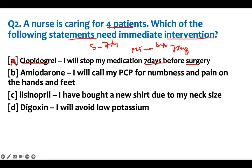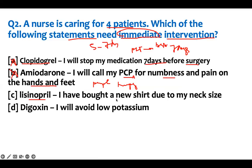Option B: a patient on amiodarone says, 'I will call my PCP for numbness and pain in the hand and feet.' This is peripheral neuropathy — the N in P-CLONE. That is not an immediate emergency. You need to follow up and manage it, but you don't need to call immediately. It does not need immediate intervention.